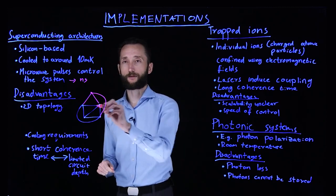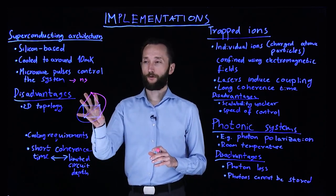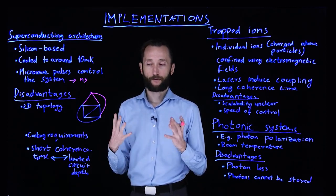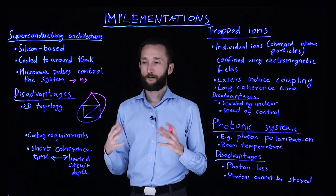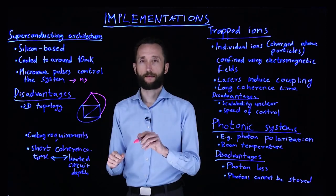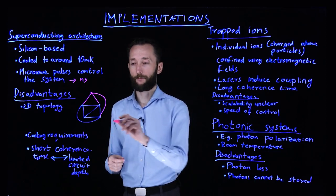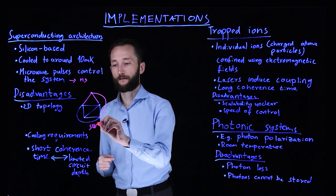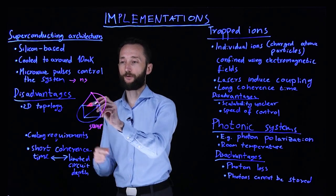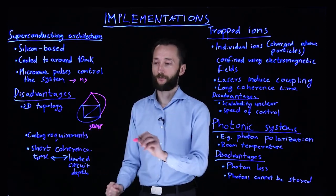You cannot cross the wires. So when it comes to a problem like this, this is where the quantum compiler starts to play an important role. Because what it would do if you want to interact two qubits, it would implement something called a swap. For instance, it would swap these two, perform the interaction, and then swap them back.